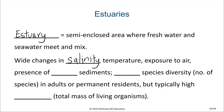In estuaries, there will normally be soft sediments. And typically, there will be low species diversity — meaning the number of different types of species — especially in adults or permanent residents of estuaries, but typically high biomass, the total mass of living organisms. This includes the meofauna in addition to many plants right on the border: the salt marshes at the interface between the water and the land.